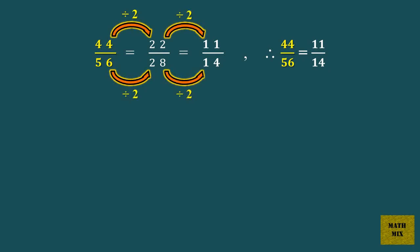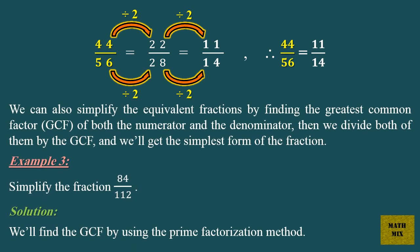44 over 56 equals 22 over 28, which equals 11 over 14. Therefore 44 over 56 equals 11 over 14. We can also simplify equivalent fractions by finding the greatest common factor, GCF, of both the numerator and the denominator, then divide both of them by the GCF, and we'll get the simplest form of the fraction.